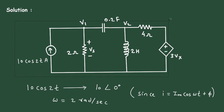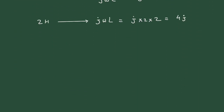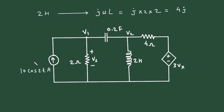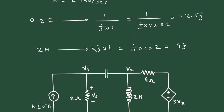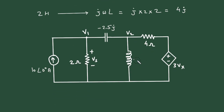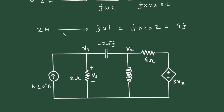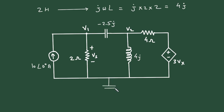Now we will redraw this circuit and make the equivalent frequency domain components. The current source becomes 10∠0° amperes, the 0.2 farad becomes −j2.5, and the 2 henry becomes j4. Let's say this is the reference node, with all currents flowing toward it: I1, I2, I3, and I4.